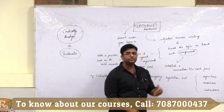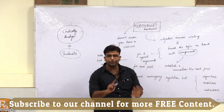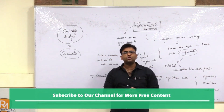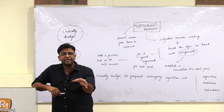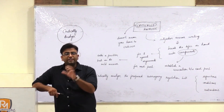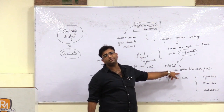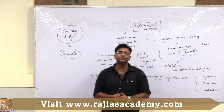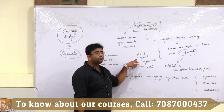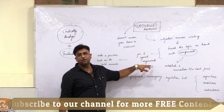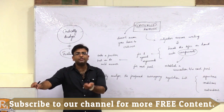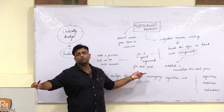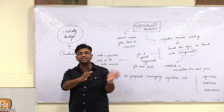As part of the procedure to answer a question related to 'critically analyze', what you have to do is break the topic in hand into components. You have to break the topic into parts. Then you have to show an interconnection between the parts. With showing the interconnection between the parts, the next thing you have to do in critical analysis is provide for and against arguments for each of the components, along with establishing the connection between each component.